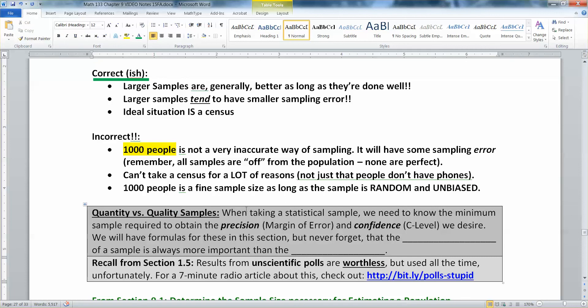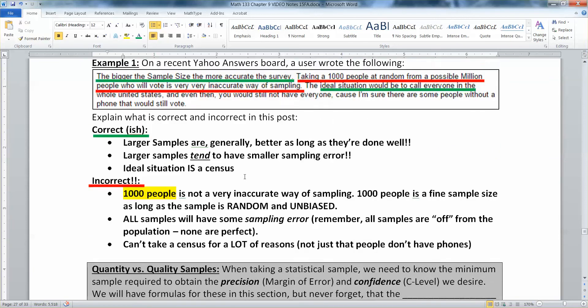When taking a statistical sample the things we care about are how precise we want to be, that's your margin of error, and how confident you want to be. Do you want to be 90 percent sure, 95 percent sure, 99? You're never going to be a hundred percent sure because you can't take a census. The ideal would be a census but you can't take one because nobody's got the time or the money or whatever. So if you can't take a census for a lot of reasons that means you're always going to have sampling error.